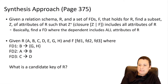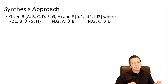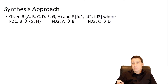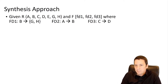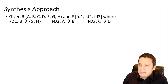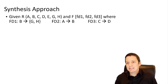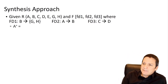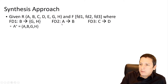Given this relation R with this set of attributes and these three functional dependencies — the same three we just looked at — what is a candidate key of this relation R? We're going to start with the synthesis approach. This is the quickest way to do this but also the most error-prone. We have relation A B C D E G H and three functional dependencies: B determines GH, A determines B, and C determines D.